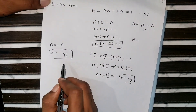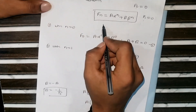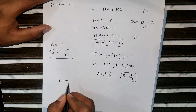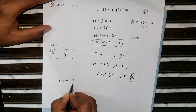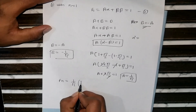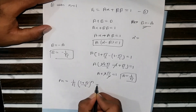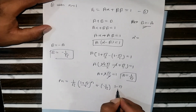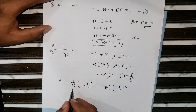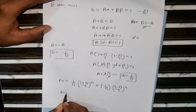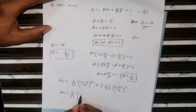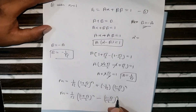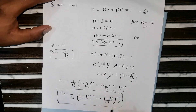Now that we have both A and B, substitute them into the general equation. The final solution becomes f(n) = (1/√5)·((1 + √5)/2)ⁿ − (1/√5)·((1 − √5)/2)ⁿ, which simplifies to f(n) = (1/√5) · [((1 + √5)/2)ⁿ − ((1 − √5)/2)ⁿ]. This is the closed-form solution for the recurrence relation. Thank you.